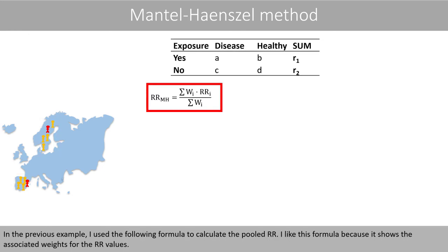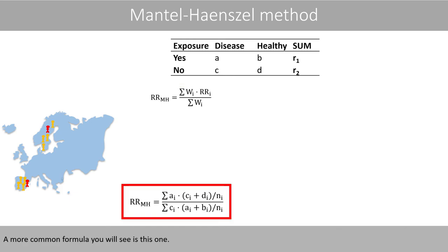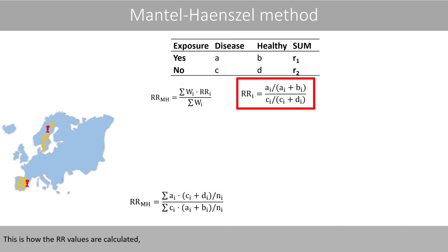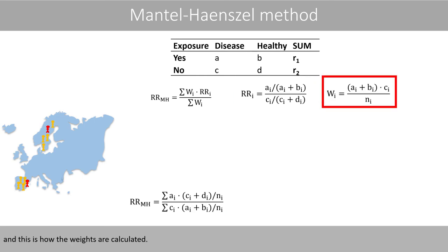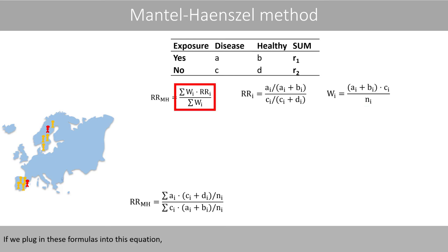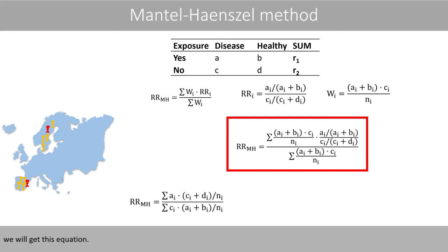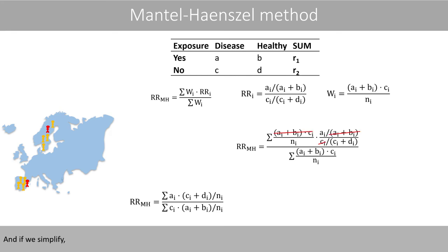In the previous example, I used a formula that shows the associated weights for the relative risk values explicitly. A more common formula is also available. This is how the relative risk values are calculated, and this is how the weights are calculated. If we plug in these formulas and simplify, we obtain the standard equation for the pooled Mantel-Haenszel relative risk.